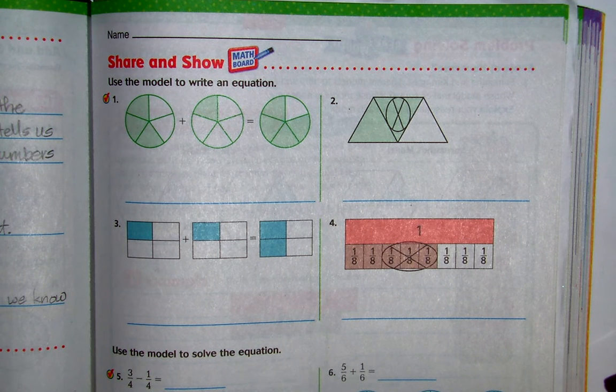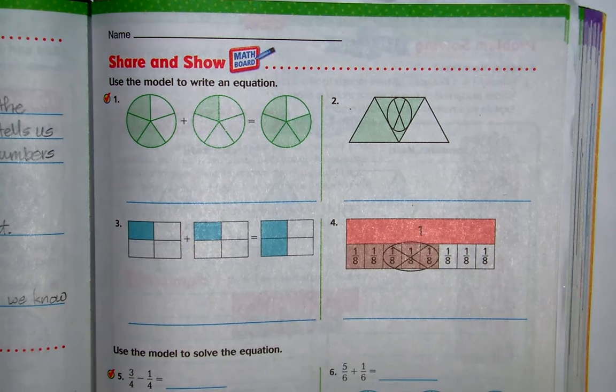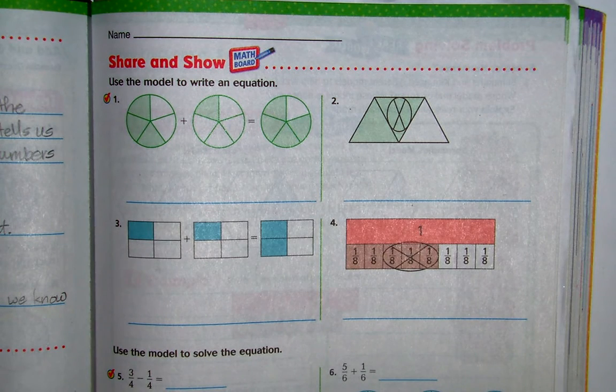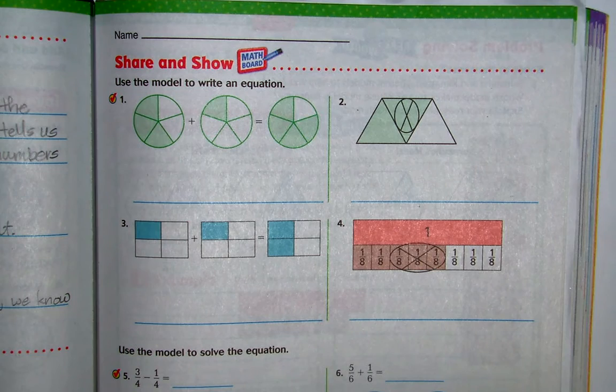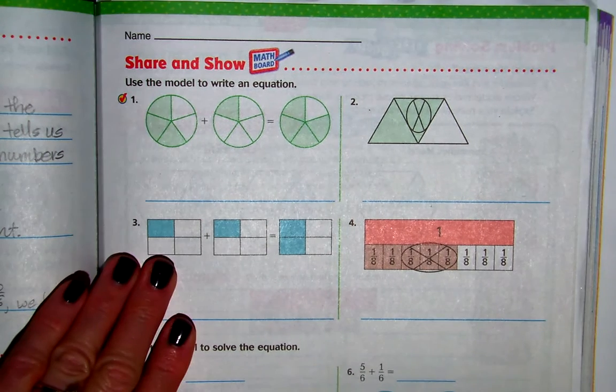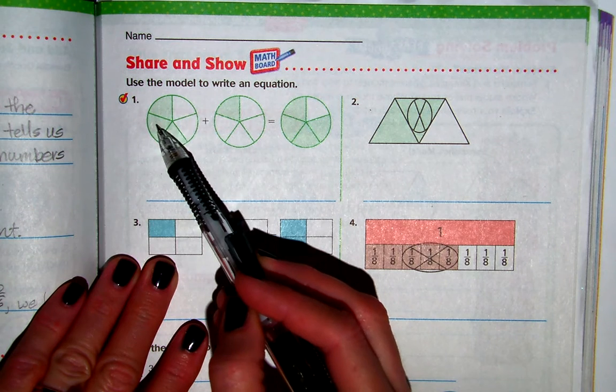So on number 1 it says use the model to write an equation and this goes back to the very first thing that we did when we started talking about adding parts of a whole or fractions. And so we count the number of pieces in the whole, 1, 2, 3, 4, 5.